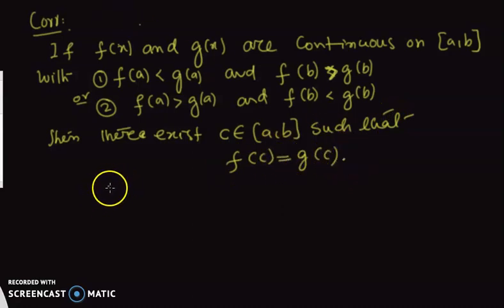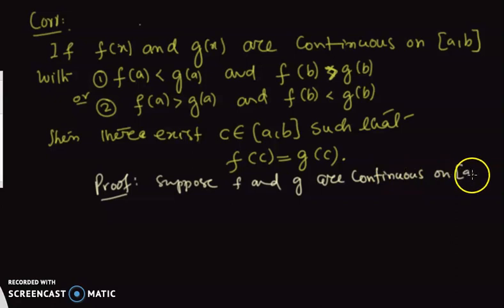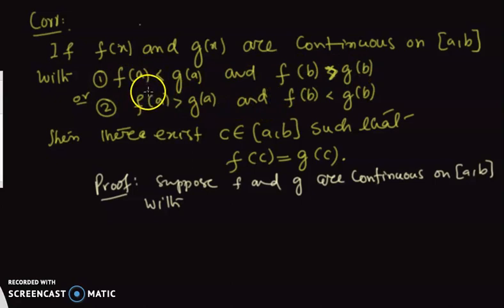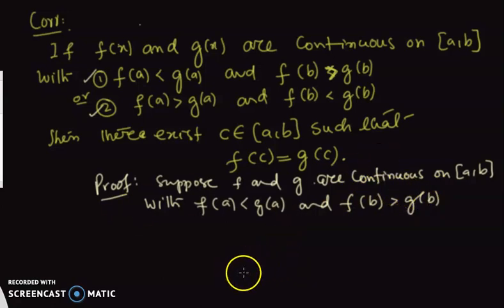Now let's prove this. Suppose f and g are continuous on [a, b]. Suppose the first condition holds: f(a) < g(a) and f(b) > g(b). One of the two conditions must hold. We will show there exists a c. Define a new function h(x) = f(x) − g(x).